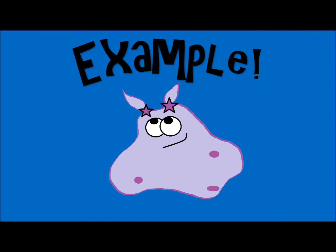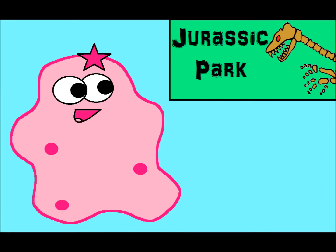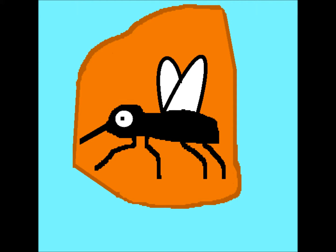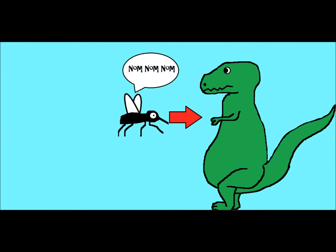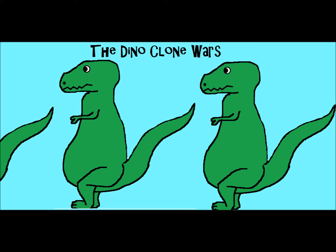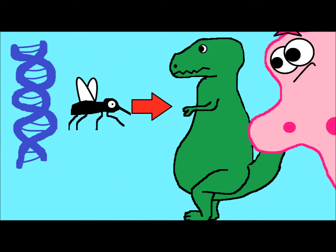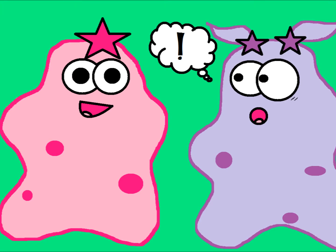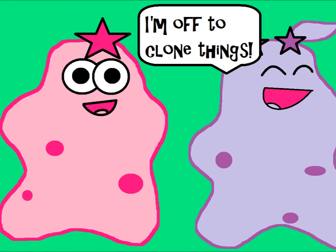If you've ever seen the movie Jurassic Park, you know the storyline where scientists find a mosquito trapped in amber. This mosquito had once fed on a dinosaur, so it had dinosaur blood inside it — and in that blood was a molecule called DNA. They used the DNA to clone and create dinosaurs. Now there are some unrealistic things in this, but the idea of cloning is not unrealistic because it can and does occur.